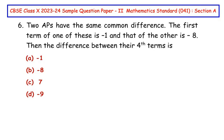Two arithmetic progressions have the same common difference. The first term of one of these is negative one and that of the other is negative eight. Then the difference between their fourth terms is... So here two arithmetic progressions are given and the first term of the first AP is minus one and for the second AP the first term is negative eight.